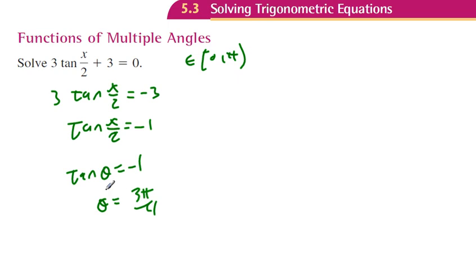But wait, this wasn't theta, right? We let theta equal x over 2. So let's replace theta back with x over 2. So x over 2 equals 3π over 4. See what I did? I replaced theta with x over 2, reversing our original substitution.